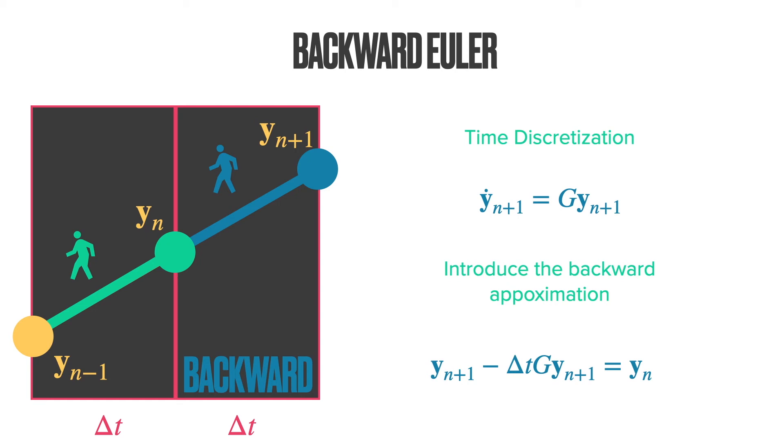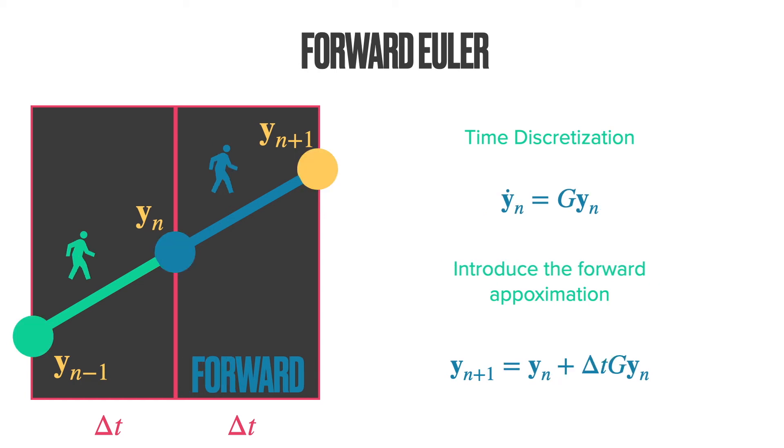However, by introducing the backward approximations, we see the expression that we obtain is slightly different. Here, you could compute, using the forward order, the displacement at n+1, using the displacements at n. However, this expression is an implicit expression. So, we have to take inverses.